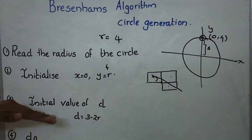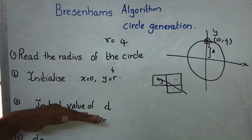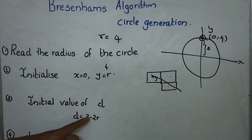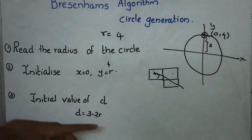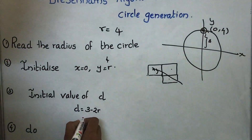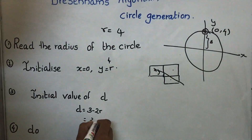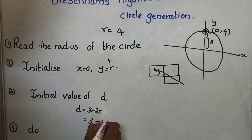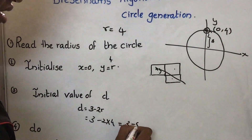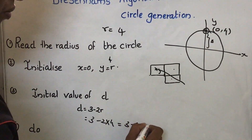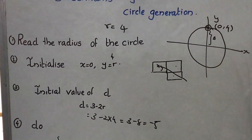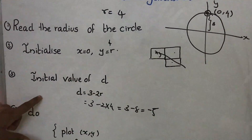Then we have to find d. So d is equal to 3 minus 2r. In our case it is equal to 3 minus 2 into 4, that is 3 minus 8, that is equal to minus 5. So we have found d.